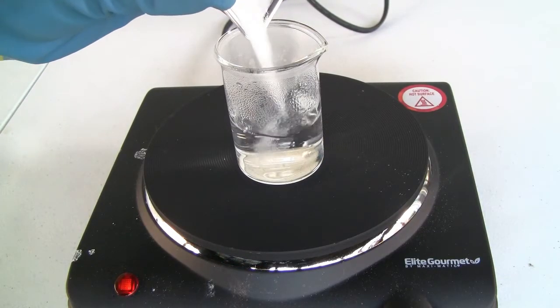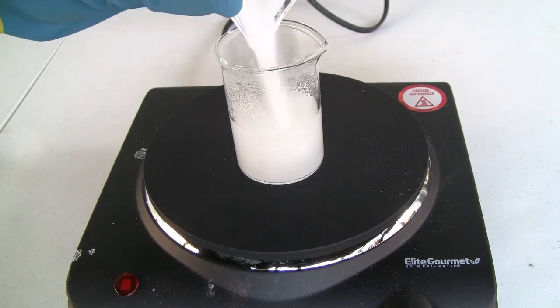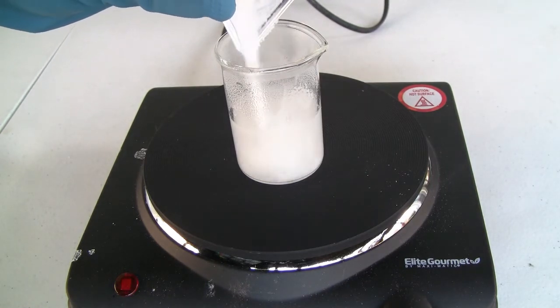I started by bringing 45 milliliters of distilled water to a boil. Once at a boil, the borax is added and stirred.